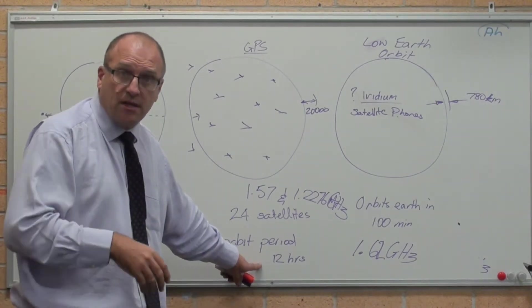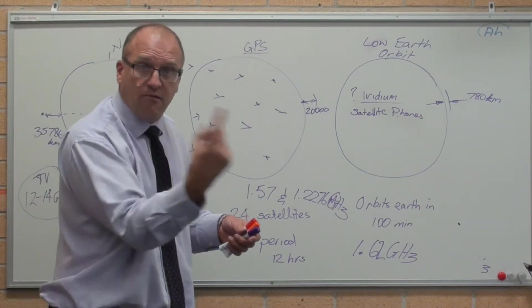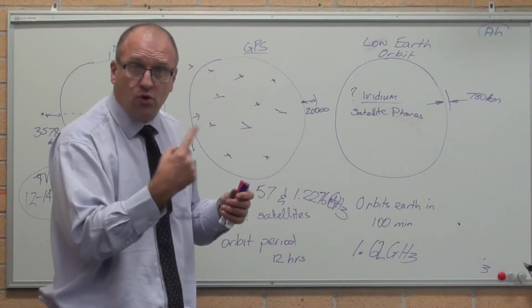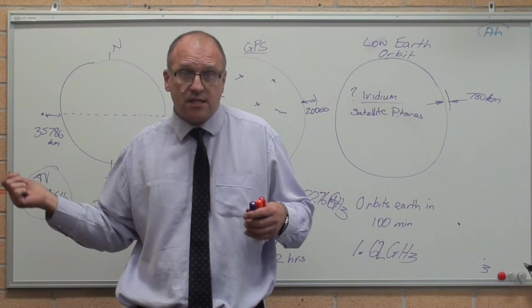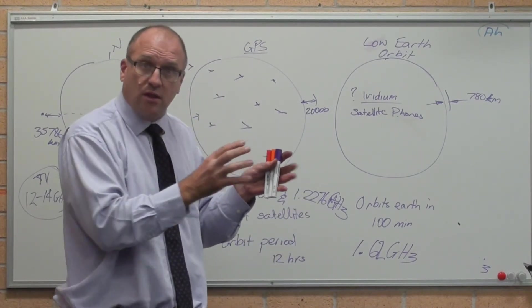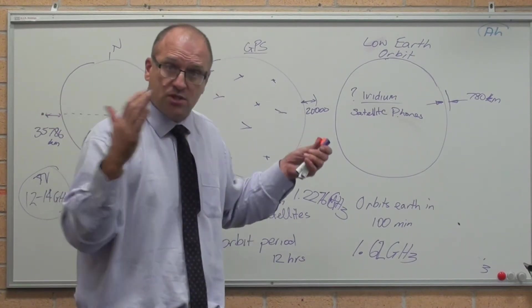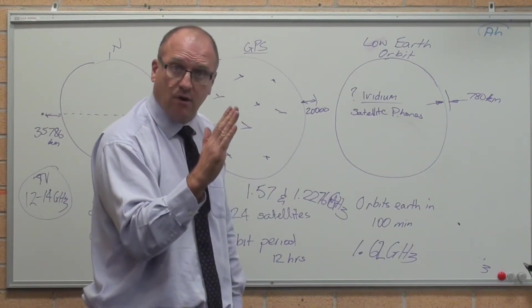Being 20,000 kilometres up, their orbit period is 12 hours. Once every 12 hours, they do a lap around the Earth. They have to travel quicker than the geostationary satellites because they're closer to Earth. So gravity's stronger and pulling them in. So they've got to travel faster to get the centripetal force to keep them at the right altitude.